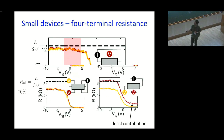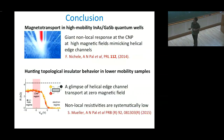In conclusion, we have shown magnetotransport measurements demonstrating the generation of helical edge channels due to quantum Hall hybridization between Landau levels. We have also observed glimpses of helical edge channel transport in the disordered material.